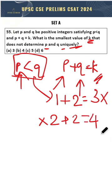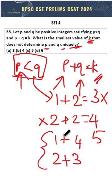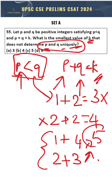The next option will be 5. When I take 5, I can go for 1 and 4 or I can go for 2 and 3, which means I have two unique possibilities to reach 5. Therefore, the smallest value of k that does not determine p and q uniquely is 5. Option c is the right answer.